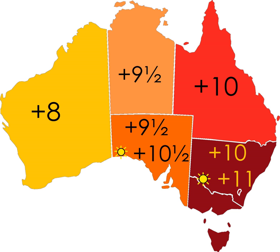Queensland has had a particularly involved debate over daylight saving time, with public opinion geographically divided. A referendum on DST in 1992, following a three-year trial from 1989–90 to 1991–92, was defeated with a 54.5% negative vote. The referendum result displayed a distinct trend: the negative vote was strongest in northern and western districts, while the positive vote was strongest in the southeastern region, e.g., in Brisbane.